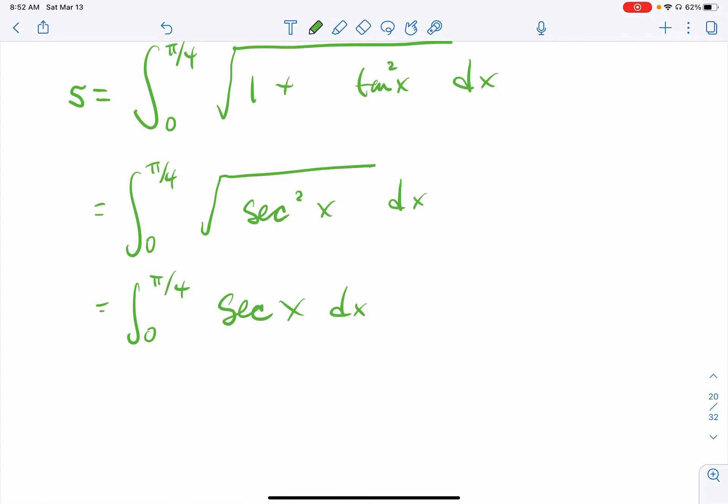Secant x dx. All right. So secant x has a very special antiderivative. If you don't remember it, it is the natural log of the absolute value of secant x plus tangent x. Plus c. Except no, not really. From zero to pi over four.